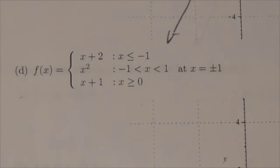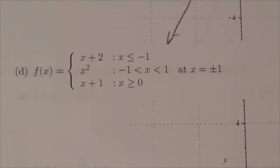All right, hi everybody. This is the Math 31 Limits Review. This is question 3D. We're going to sketch this piecewise function and then discuss continuity at the values x equals plus 1 and minus 1.